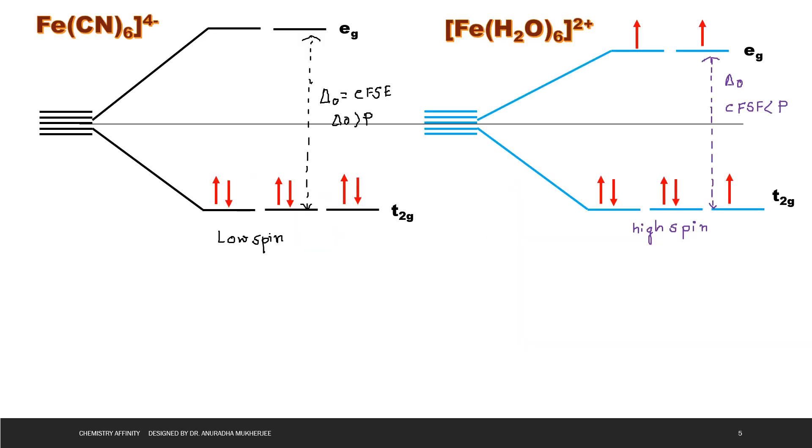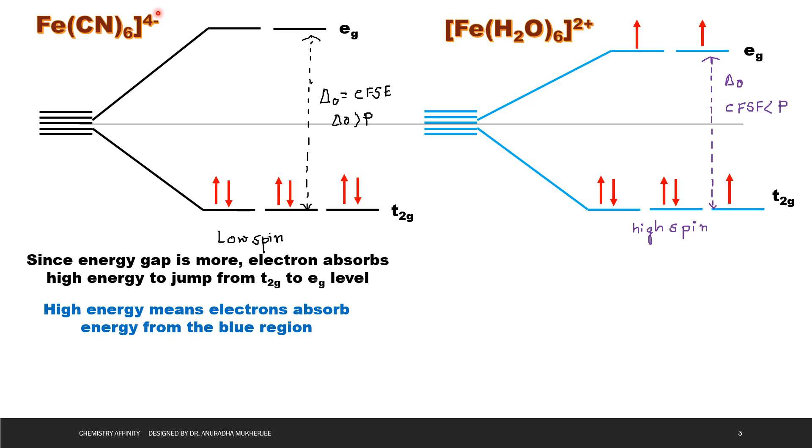Fe(CN)6 4- complex is a low spin complex. That's why the energy gap is more. Since energy gap is more, electron absorbs high energy to jump from T2G to EG level. High energy means electron absorbs energy from the blue region. Since absorbed energy from the blue region, reflected light will be red to yellow region. That means color of the complex will be red to yellow.